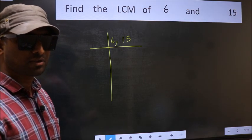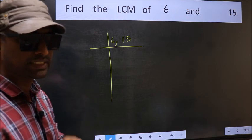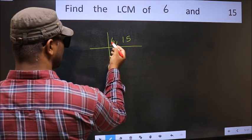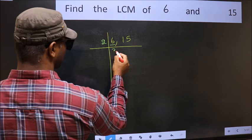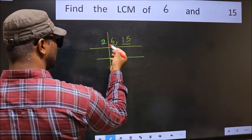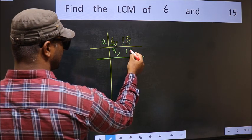Now focus on the first number which is 6 here. 6 is 2, 3, 6. The other number 15 is not divisible by 2 so you write it down as it is.